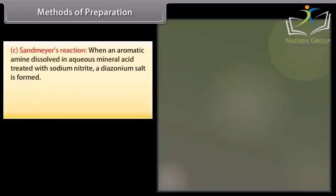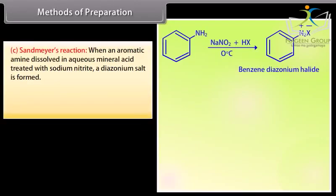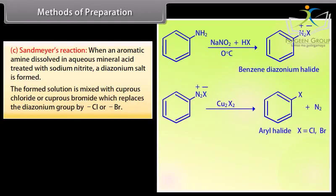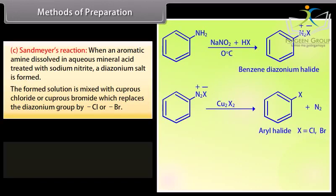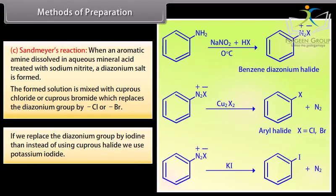Methods of Preparation — Sandmeyer's Reaction. When an aromatic amine dissolved in aqueous mineral acid is treated with sodium nitrate, a diazonium salt is formed. The formed solution is mixed with cuprous chloride or cuprous bromide, which replaces the diazonium group by Cl or Br. If we replace the diazonium group with iodine, then instead of using cuprous halide, we use potassium iodide.